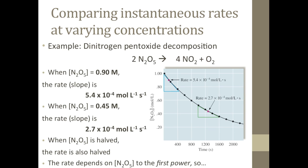At this first labeled point on the graph, the concentration of reactant is 0.90 molar and the slope of the tangent line at that point is determined to be 5.4 times 10 to the negative 4th power moles per liter per second.